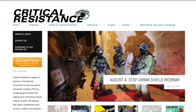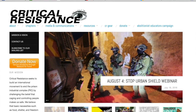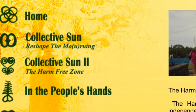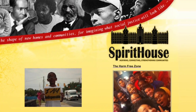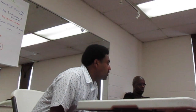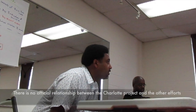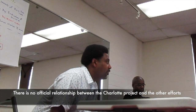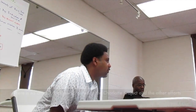The two most successful Harm-Free Zones are Critical Resistance out of New York — which is the framework being used here — and a local project in Durham at Spirit House. Both have had good success and are still in the building stage. Critical Resistance has been doing Harm-Free Zones for around 15 years, and Spirit House is in their eighth year. They are designed around what those communities ask for.